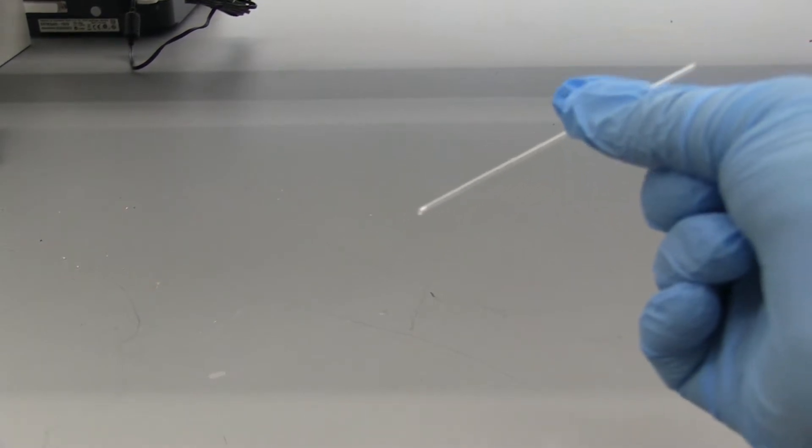Alright, so we have our unknown. It's a white, shiny powder. And now we're going to take this over to the melting point apparatus.